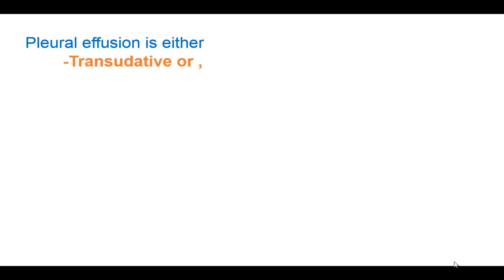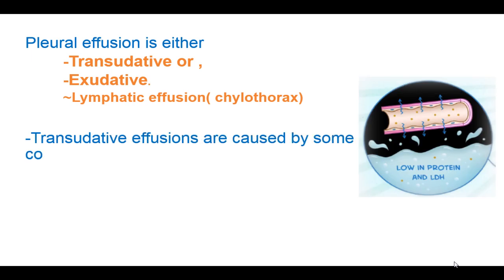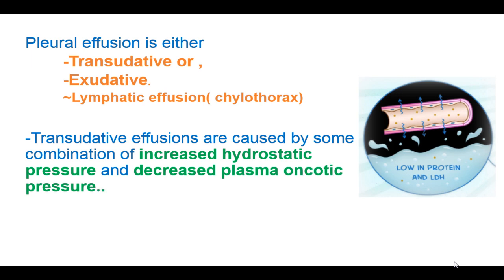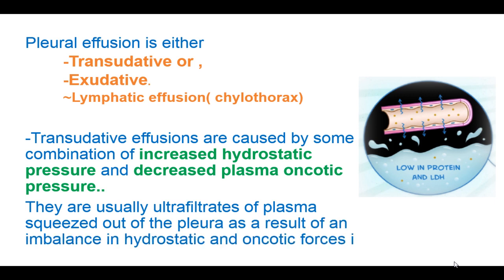Pleural effusion is either transudative effusion, exudative effusion, or sometimes lymphatic effusion known as chylothorax. A transudative effusion is caused by some combination of increased hydrostatic pressure and decreased plasma oncotic pressure. It is usually an ultrafiltrate of plasma which has been squeezed out of the pleura as a result of an imbalance between the hydrostatic and oncotic forces in the chest.